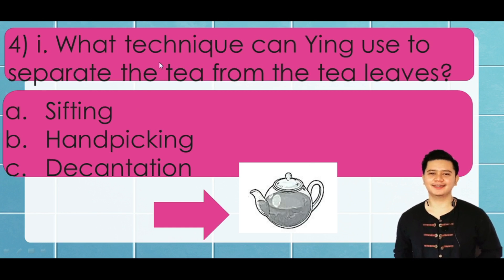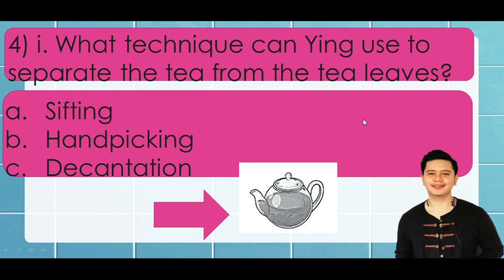The question is: what technique can Yin use to separate the tea from the tea leaves? The choices are: a) sifting, b) hand picking, or c) decantation. The correct answer is letter c — decantation — because we cannot sift the tea leaves to separate them from the tea, and hand picking would be too hard.